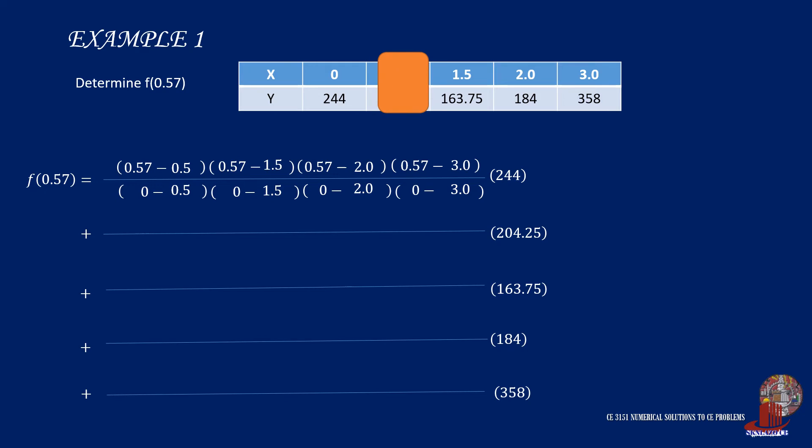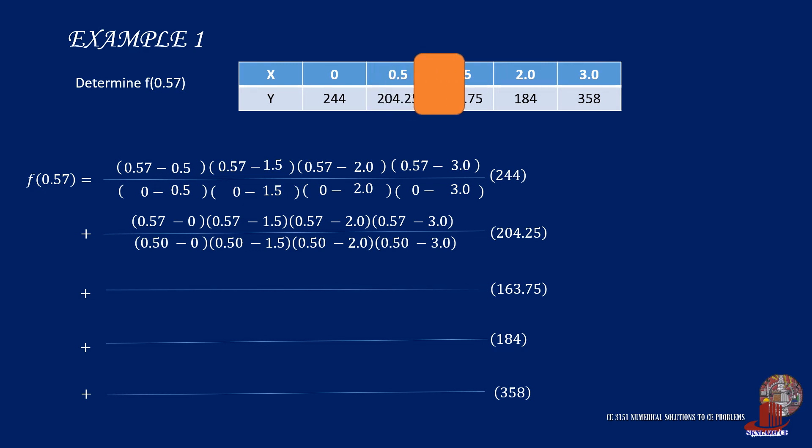The second term will cover a numerator which comprises of 0.57 less 0, 0.57 minus 1.5, 0.57 minus 2, and 0.57 minus 3.